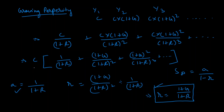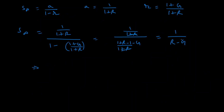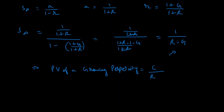We had the present value equal to C times whatever was the term within brackets. So multiplying by C, the present value of a growing perpetuity is C divided by (R - g).